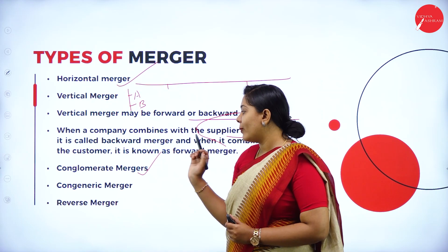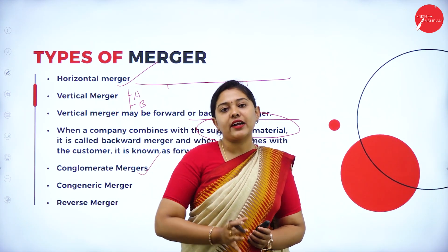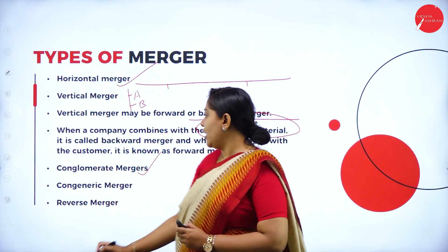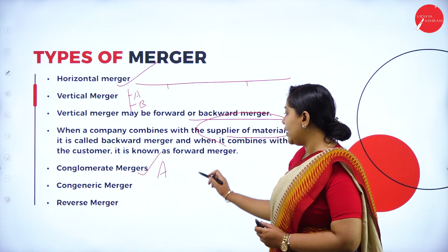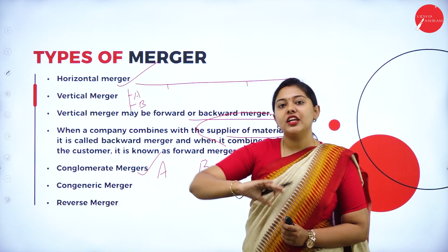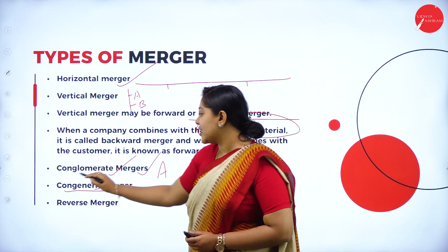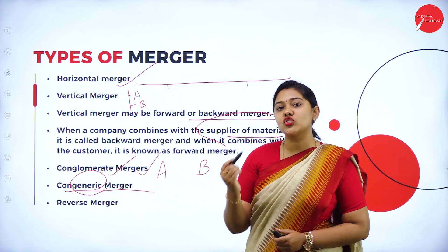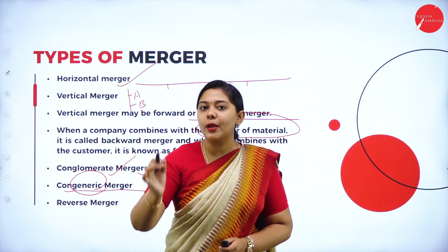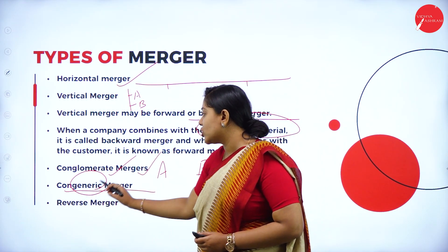Next, we have conglomerate merger. Conglomerate means two different business activities in two different industries. For example, Company A is in the automobile industry and Company B is in jewellery making — two completely different business activities. If they merge, it is called a conglomerate merger. Congeneric merger: the word 'generic' means similar. They are in the same industry but cater to different product lines to customers — that is a congeneric merger.